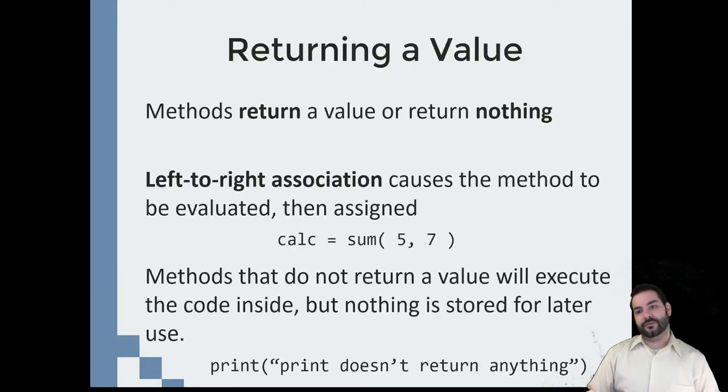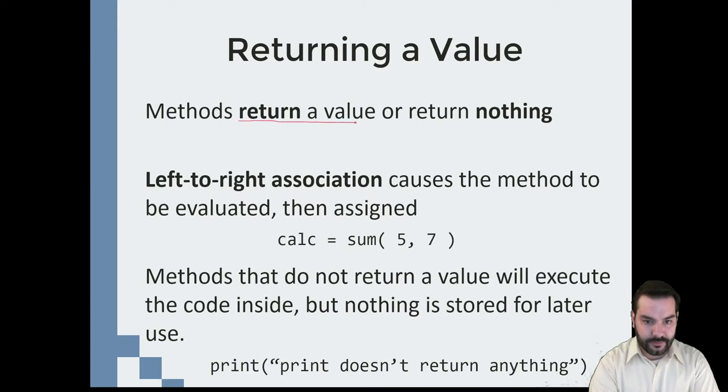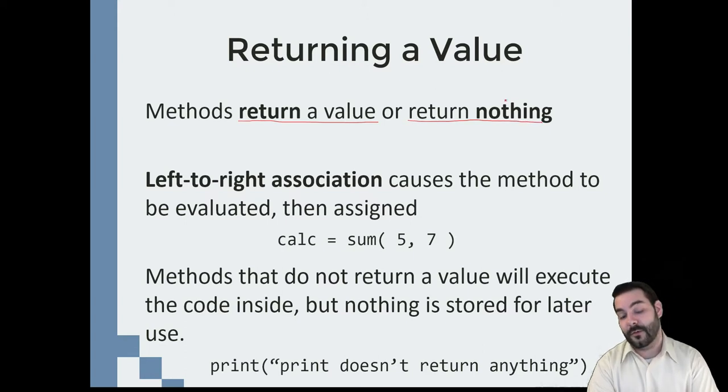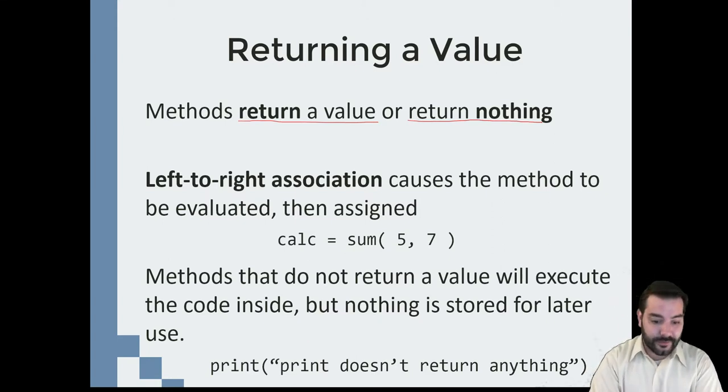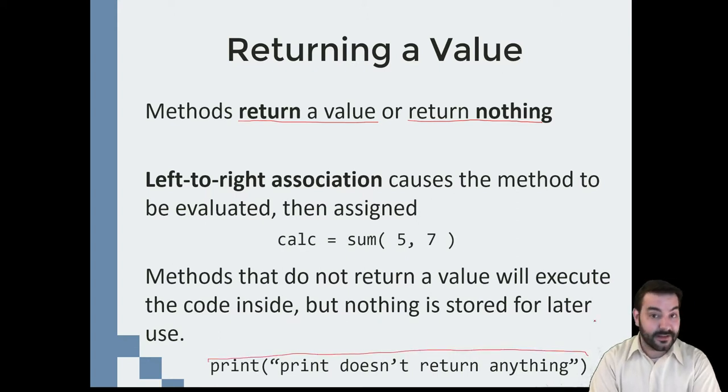So one of the things that we have to identify is how we want our functions to return values. They can either return a value or they can return nothing. And that's a very interesting thing, but we've already kind of been looking at that a few different times. For example, print. Print does not actually return anything. It displays something to the screen. It's doing something, it's just not returning a value. That's why we don't save it.